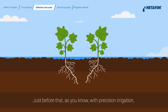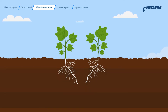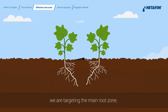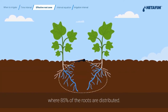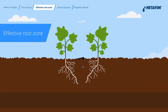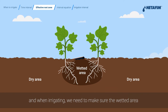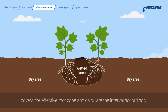Just before that — as you know, with precision irrigation, you're not irrigating the full soil profile. We're targeting the main root zone, where 85% of the roots are distributed. We call this the effective root zone. In this method, we create wetted and dry areas, and when irrigating, we need to make sure the wetted area covers the effective root zone and calculate the interval accordingly.